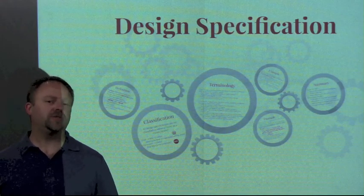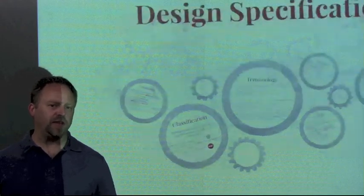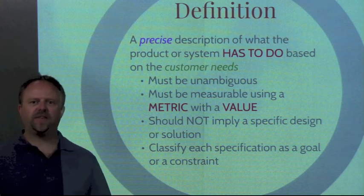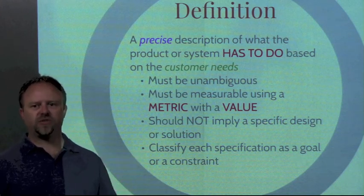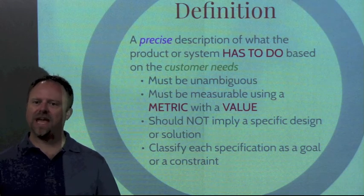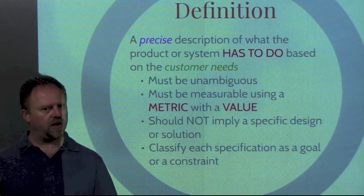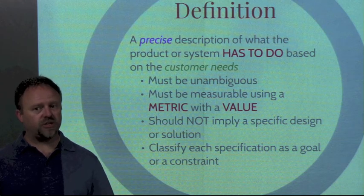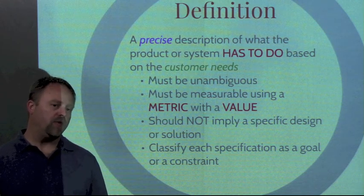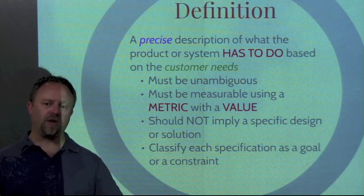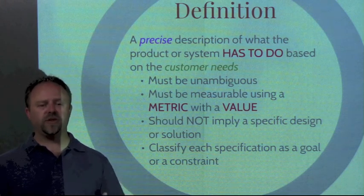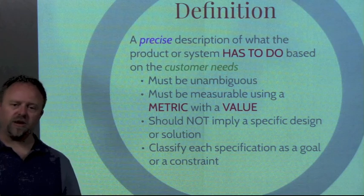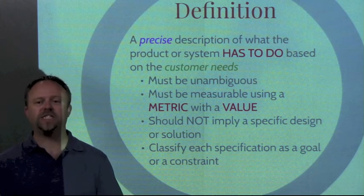So design specifications — what are they? Let's take a look at a definition. We could describe a design specification as a precise description of what the product or system has to do. We want to make sure it's clear and about the function of the design, and that it's based on the customer needs. We've been doing customer needs analysis and writing customer needs statements, and we want to use those here to make sure our final design is based on our customer needs.